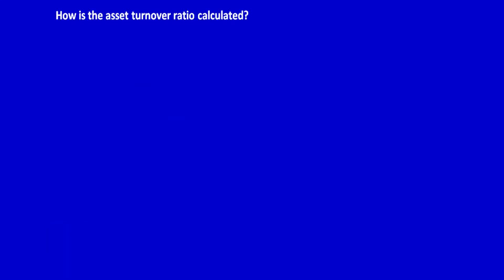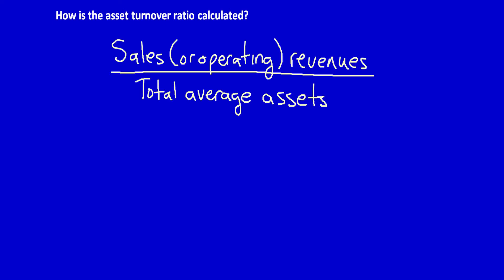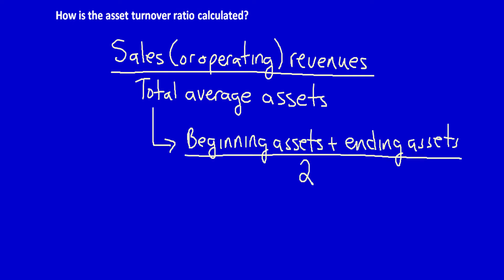How is the Asset Turnover Ratio calculated? The ratio is calculated as sales or operating revenues divided by total average assets. Total average assets is when we take the beginning assets, add in the ending assets, and divide by 2.